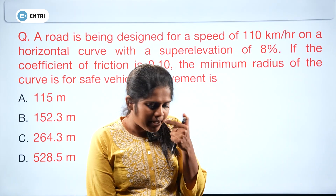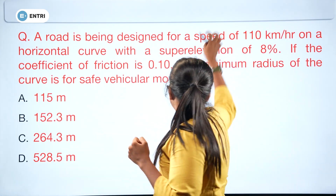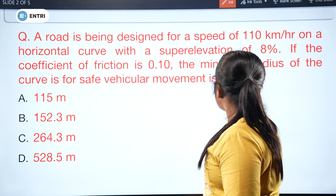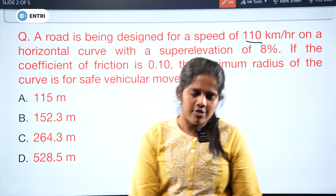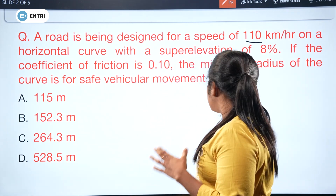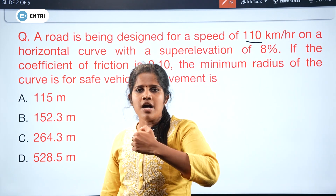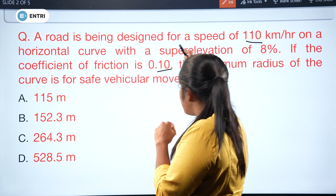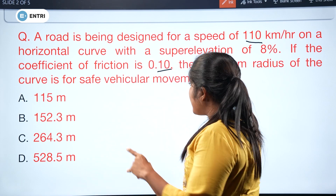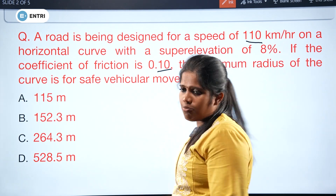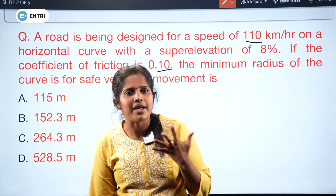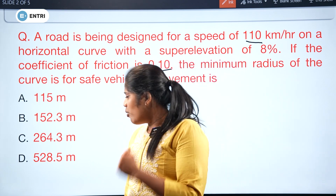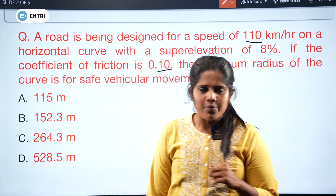Let's talk about horizontal curve and super elevation. A road is designed for a speed of 110 km per hour, with a horizontal curve and a super elevation of 8%. If the coefficient of friction is 0.10, what is the minimum radius of the curve for safe vehicular movement? Options: A - 115, B - 152.3, C - 264.3, D - 528.5 meters.